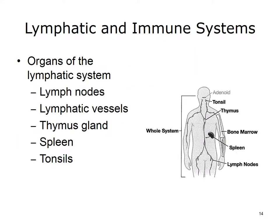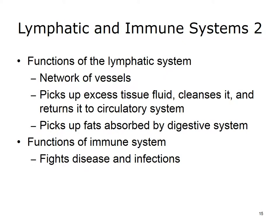Now let's turn our attention to the lymphatic and immune systems. The organs of the lymphatic system are the lymph nodes, lymphatic vessels, thymus gland, spleen, and the tonsils. The lymphatic system is comprised of a network of vessels whose function is to pick up excess tissue fluid, cleanse it, and return it to the circulatory system. Another function of the lymphatic system is to pick up fats that are absorbed by the digestive system. The primary function of the immune system is to fight disease and infections.